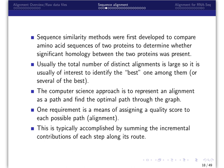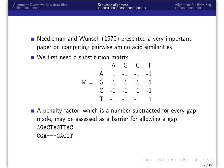One requirement is a means of assigning a quality score to each possible path or alignment. This is typically accomplished by summing the incremental contributions of each step along its route. Let's start with some of the initial approaches to alignment, most of which were first developed for protein sequencing. These serve as an important basis for modern alignment methods used in next-generation sequencing for RNA-seq assays.